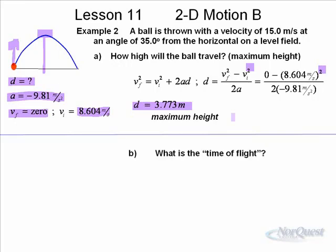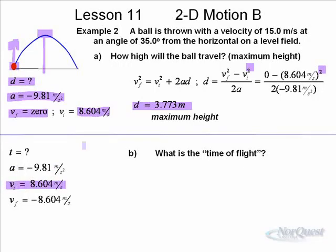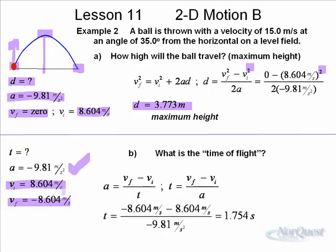Question B is, what is the time of flight? There's a couple of ways we can do this, but I'll show you one method. If we said that the initial vertical velocity when the ball left was 8.604, and we determined that using trigonometry previously, when it comes down because of symmetry, vf is going to be negative 8.604. This change in velocity is caused by gravity. We can use a simple algebraic expression: a equals vf minus vi over t. Isolate that for t by dividing both sides by a and multiplying both sides by t. You get t equals vf minus vi over a.